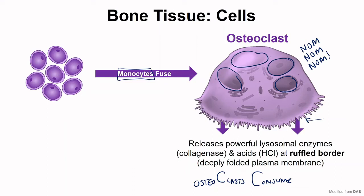Bonus question: what did I do at home to make those turkey bones so flexible? If you guessed I soaked it in acid, you're correct. I actually soaked it in hydrochloric acid because I have that at home — my partner is a chemist. For the brittle bone, I didn't have any collagenase, so instead I baked them to remove some of the water from the organic matrix. That did make them more fragile, though it's definitely not perfect — hopefully demonstrative.